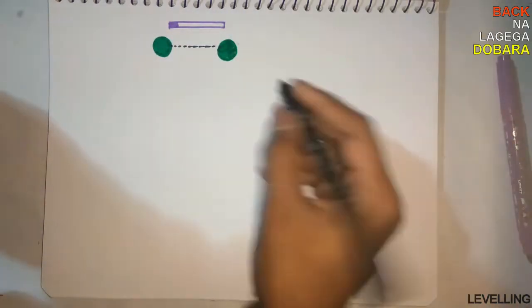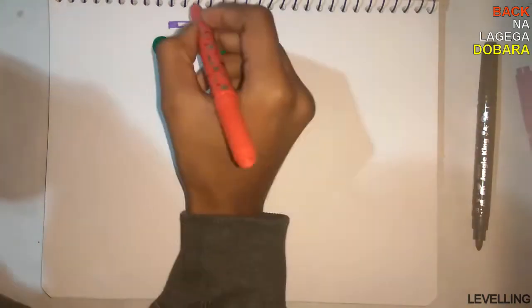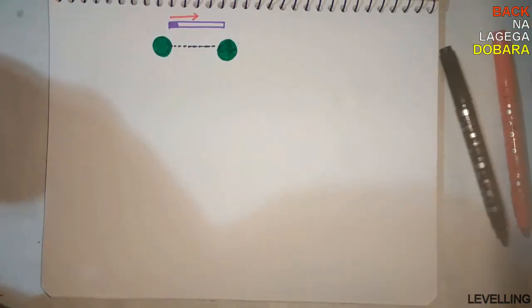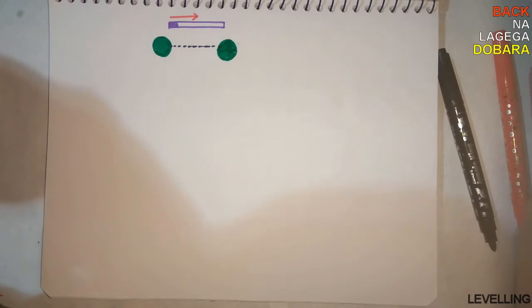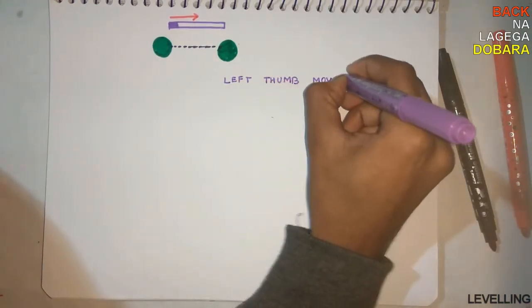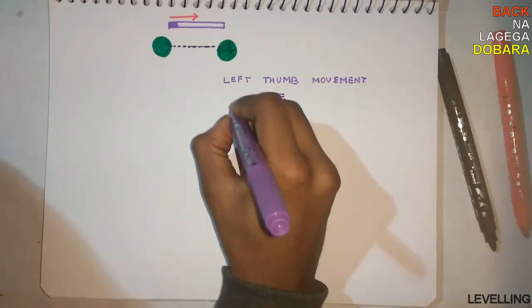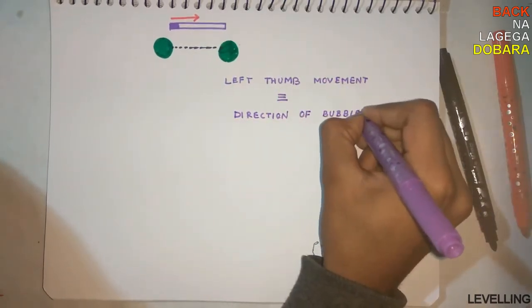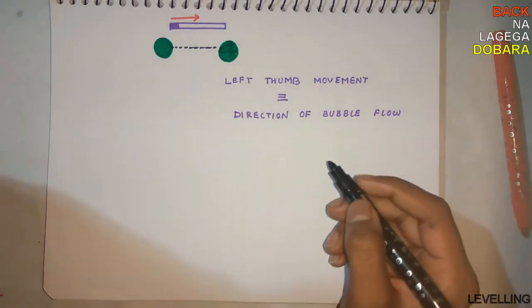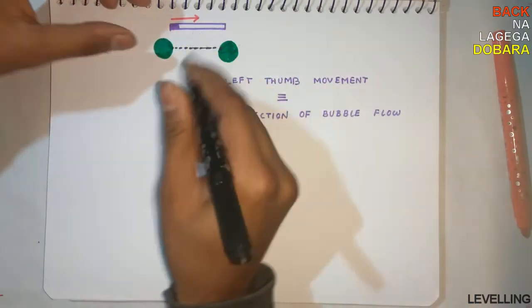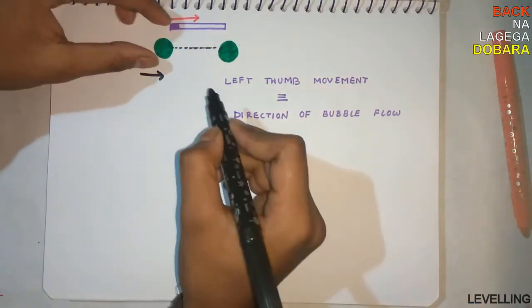Assume that the bubble is on the left side, so you want it on the right side. Just remember: the movement of your left thumb equals the direction of bubble flow. You want it right - the thumb should go right, which means anticlockwise. And at the same time, the right one will be clockwise.